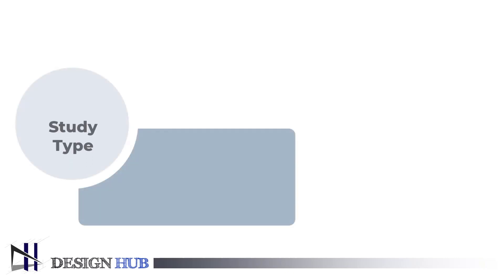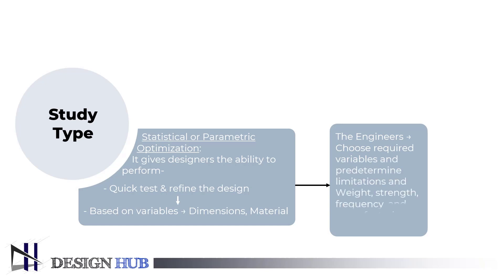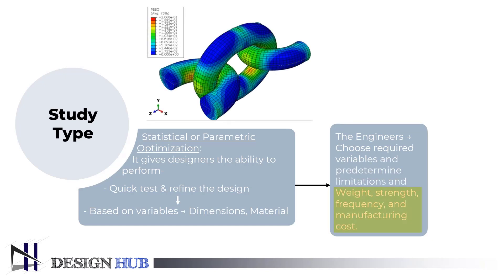The eighth study type is parametric optimization. Compared to parametric optimization, shape optimization is more versatile. This gives designers the ability to quickly test and refine a design based on variables like dimensions and materials with predetermined limitations and overall objectives like weight, strength, frequency, and even manufacturing costs. With the aid of this potential tool, we can design at the highest level without tedious trial and error. So no longer frustrated with unsatisfactory designs.